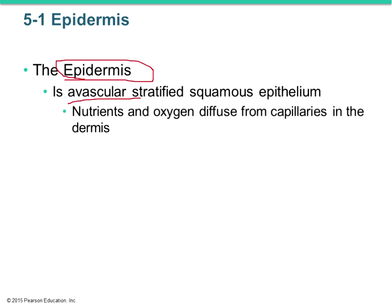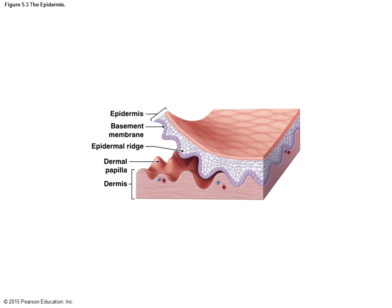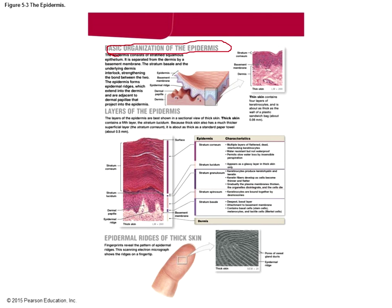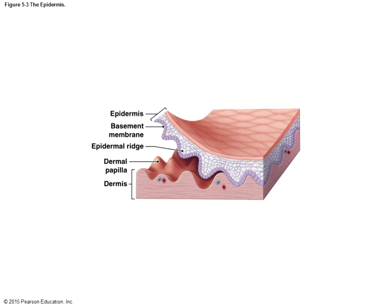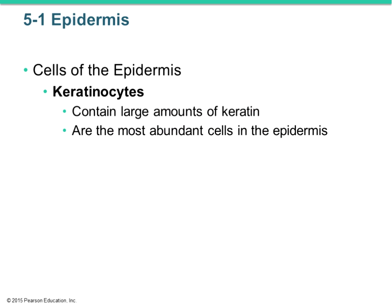The cells of the epidermis are collectively stratified squamous epithelium, but those cells are truly referred to as keratinocytes — essentially dead cells at the free surface that contain large amounts of the protein keratin. These are the most abundant cells in the epidermis and what we see at the skin surface.